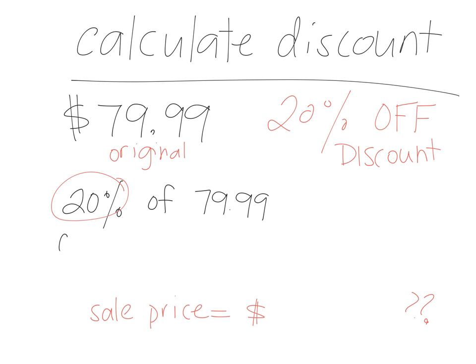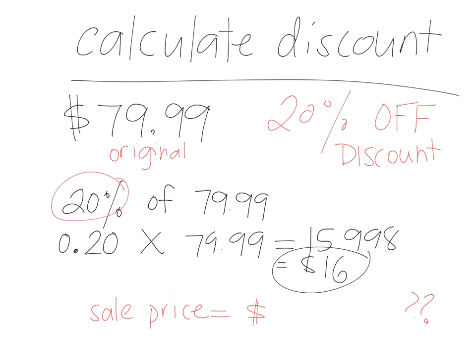Turn it into a decimal. 0.20 times $79.99. What does that equal? 15.998, so we're going to round it off to approximately $16. That means your discount is $16. That means you're saving $16.